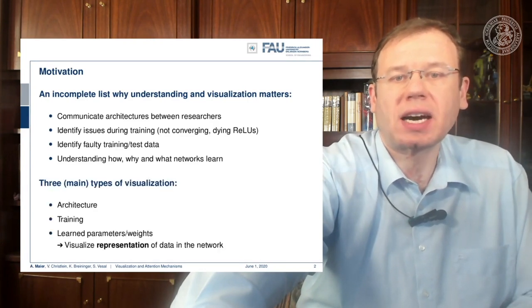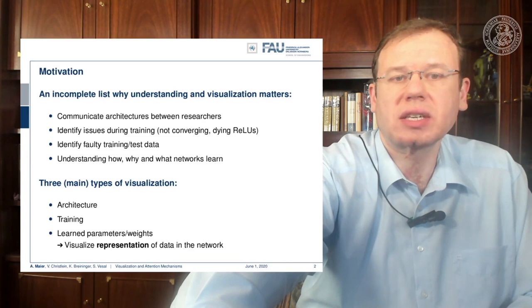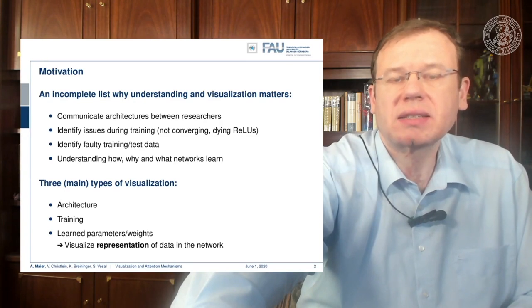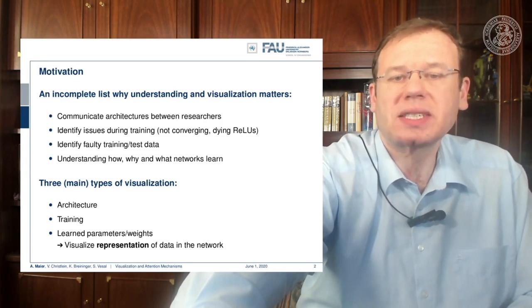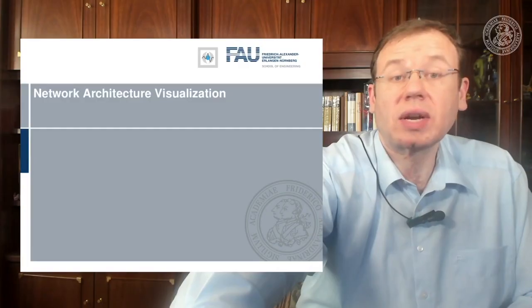There are three main types of visualization we want to cover: visualization of the architecture, visualization of the training and learned parameters and weights, and visualization of the representation of the data in the network. That said, nobody believes that layer 150 of a ResNet is a grandmother cell or that layer 100 is contours.